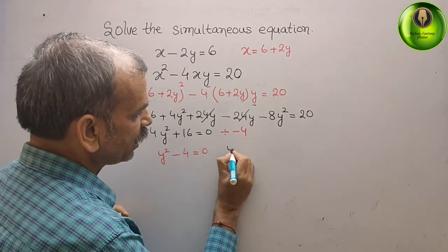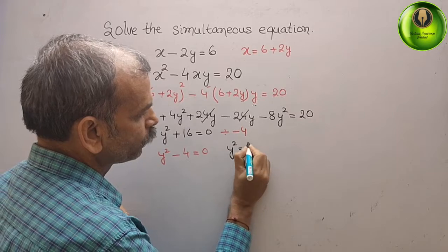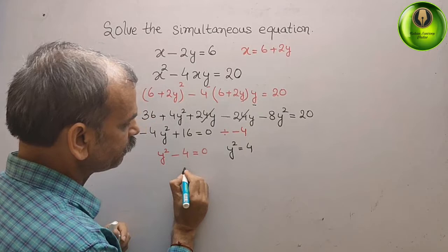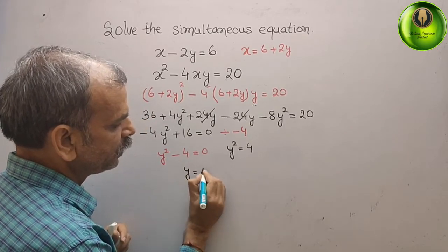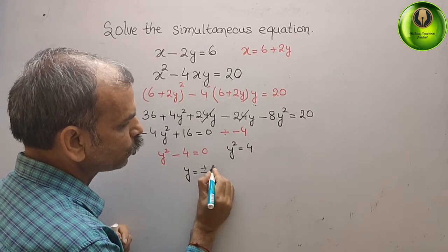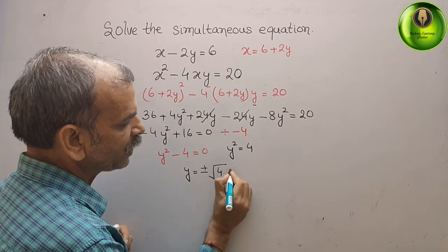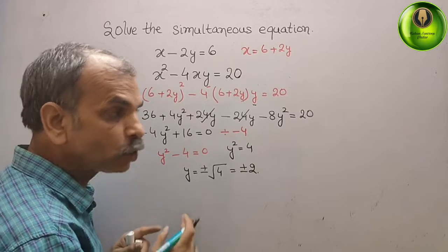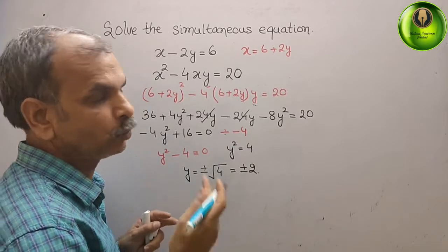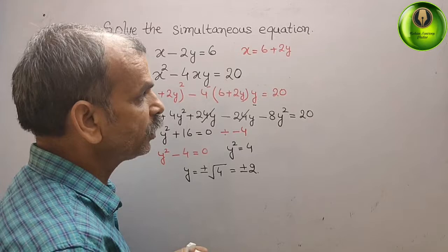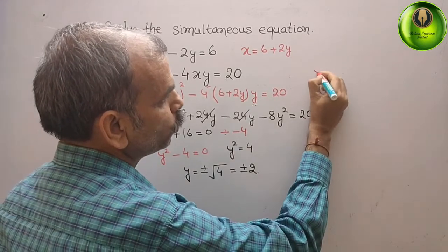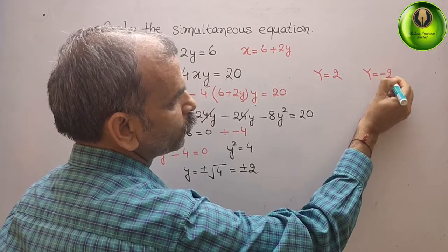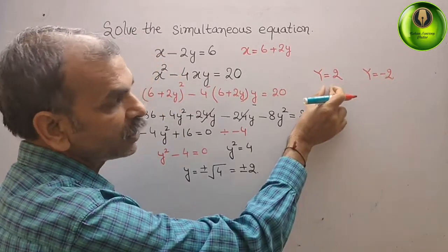It will be y squared is equal to 4. So now we can say that what is your y? Y is nothing but plus minus root of 4, that is equal to plus minus 2. Now y is 2 and y is minus 2. We will write that: y is 2 and y is minus 2.